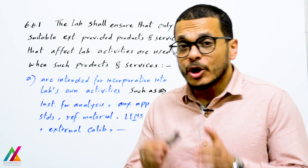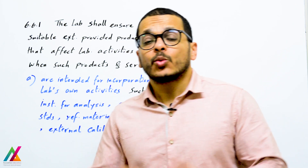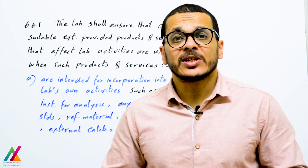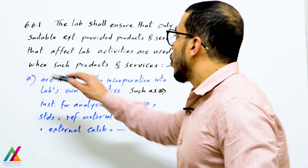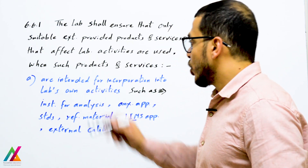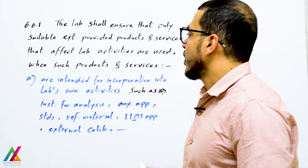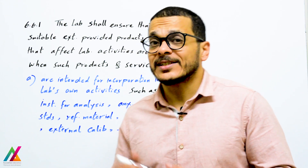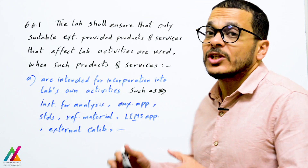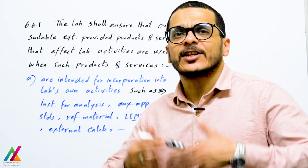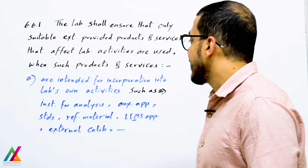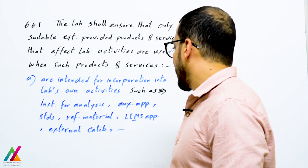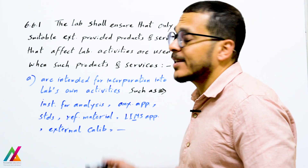The lab shall ensure that these products and services are suitable. When such products and services are intended for incorporation into lab activities — such as an instrument for analysis — this includes instruments, auxiliary parts, equipment, standards, and reference materials. All such equipment shall be suitable for the methods and suitable for the lab.